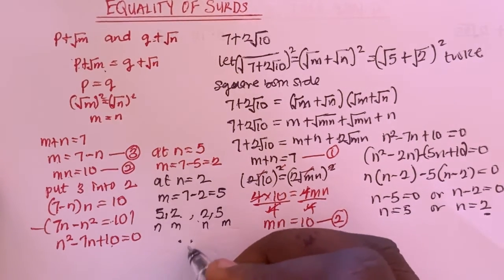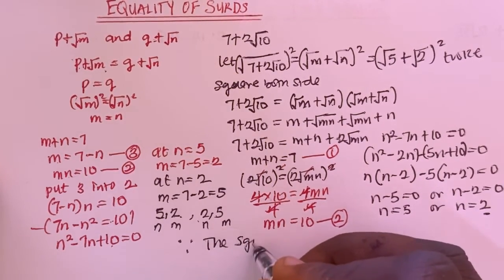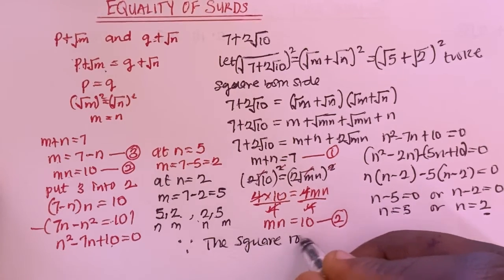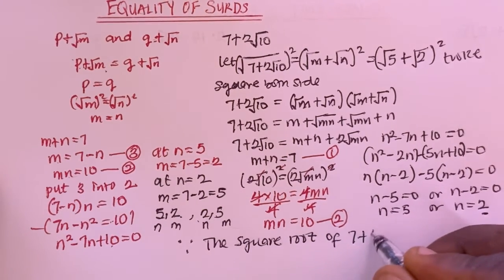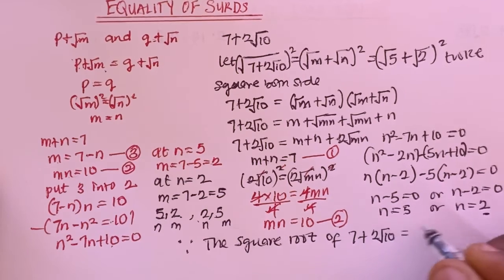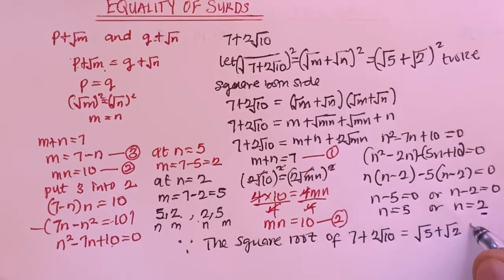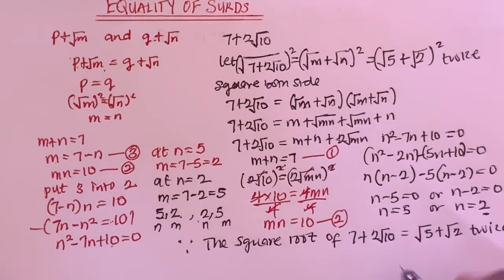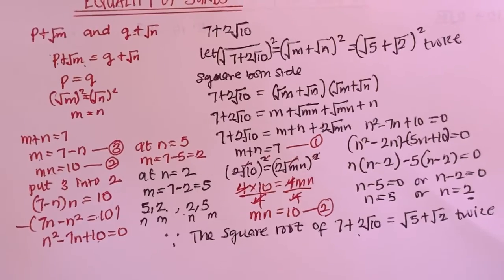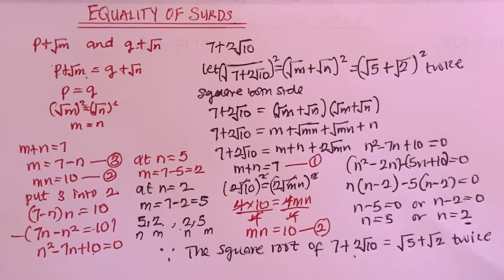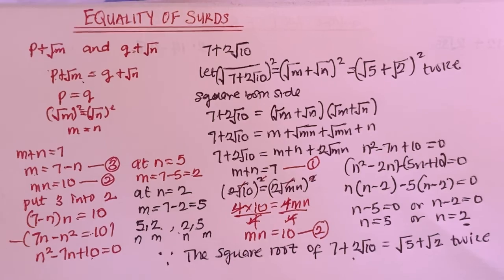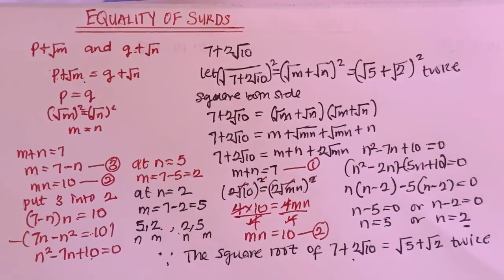Therefore, the square root of 7 plus 2 root 10 is equal to root 5 plus root 2. That's the square root of this expression. That's all about equality of surds. If you enjoyed this video, please like, share, subscribe, and click on the notification button so that you get notified whenever I drop a new video. Thanks for watching.